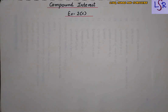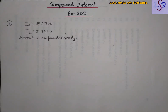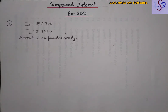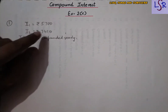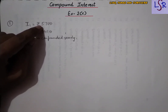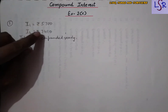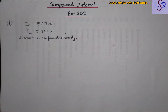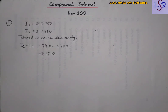In question number one, a sum is invested at compound interest compounded yearly. The interest for two successive years is rupees 5700 and rupees 7410. We have to calculate the rate of interest. As we know, the increase in interest is due to the rate of interest on the previous interest value. So first we find the difference of these two interests, which gives us 1710.